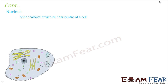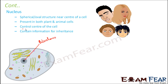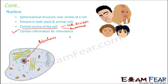The nucleus is a spherical or oval structure present near the center of the cell. It is present in both plant and animal cells and is the control center of the cell, as it controls many important activities. It plays a very important role in cell division. It also helps in the movement of substances across the nuclear membrane. The nucleus contains the information for inheritance.